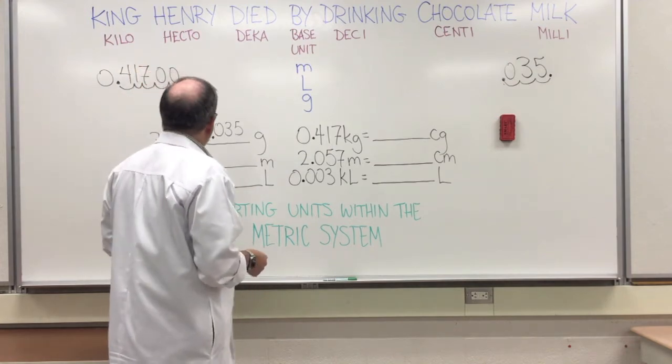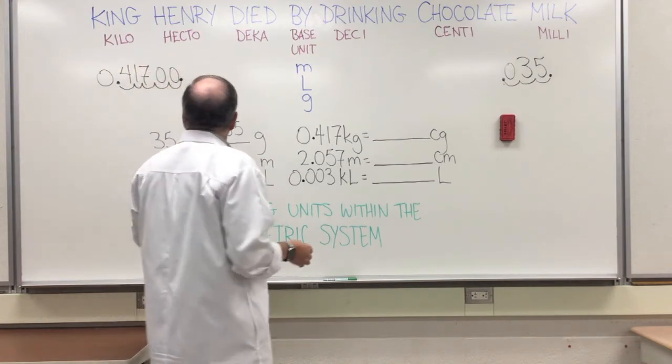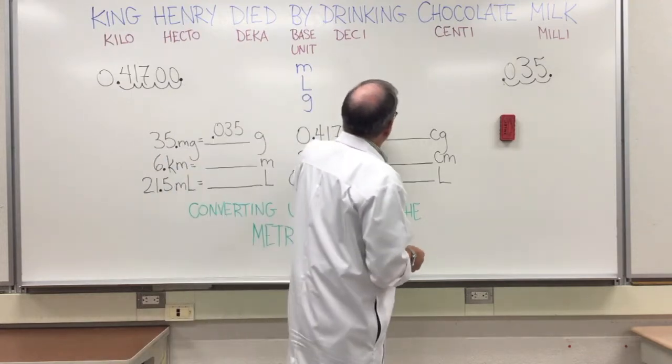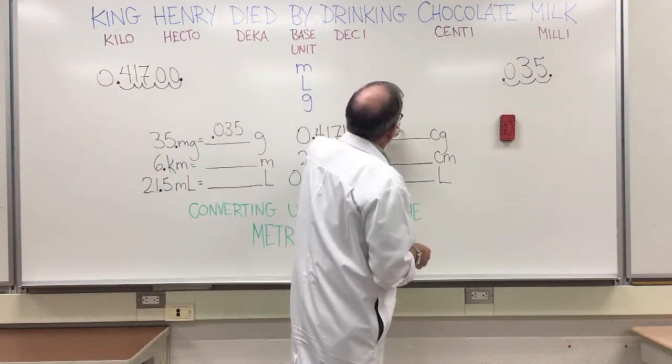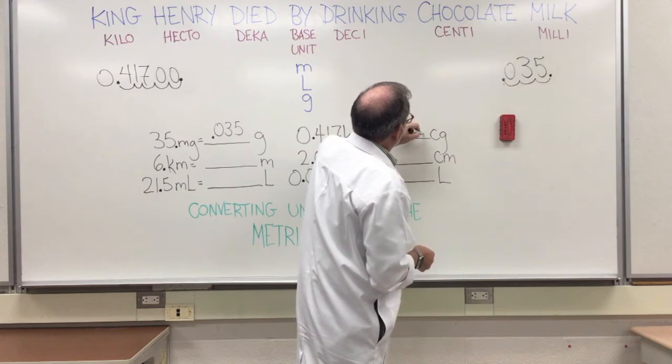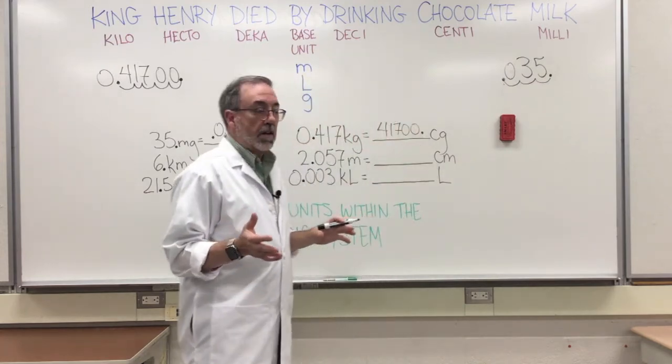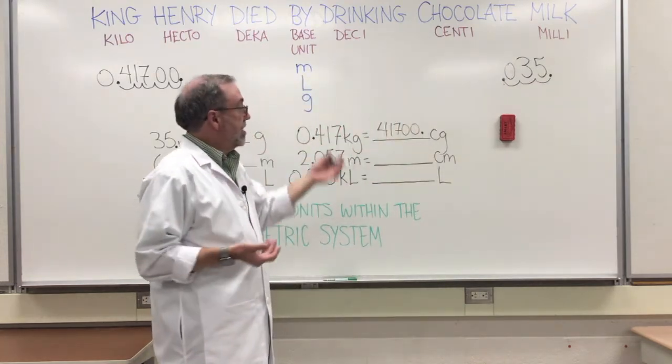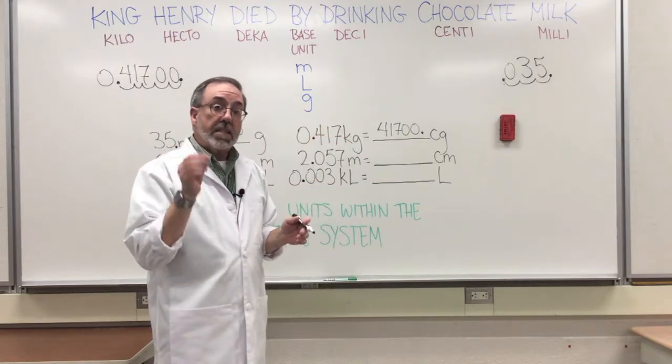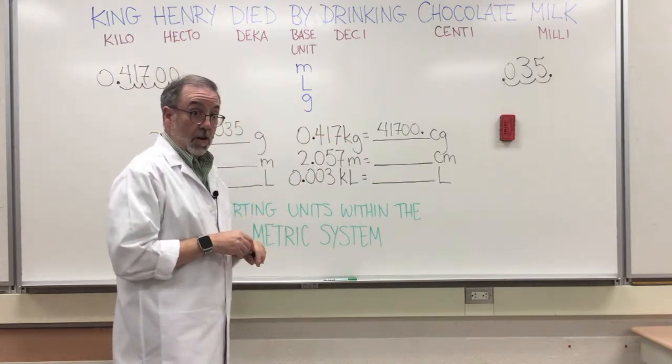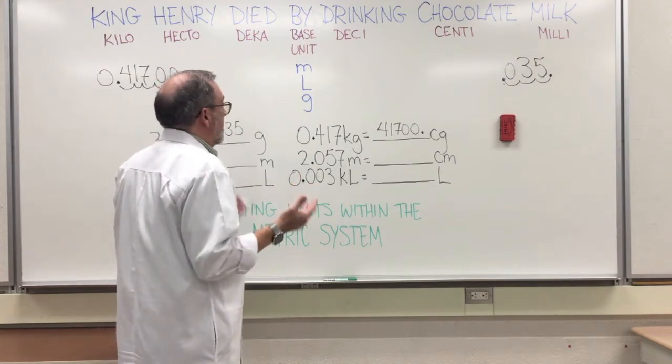So this is 41,700. Always put that decimal in there, even if you and I know that's 41,700. Still put the decimal because you went to all the trouble of doing it over here.